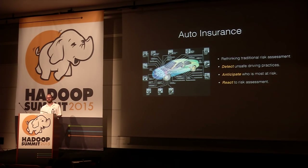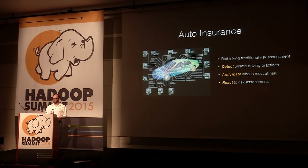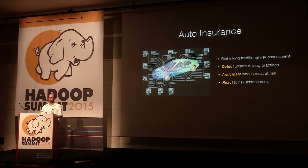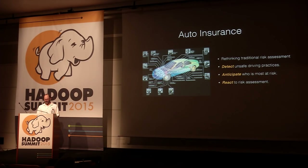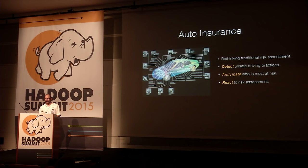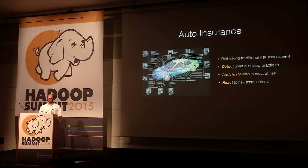In auto insurance, many companies are rethinking traditional risk assessment. Young male drivers are traditionally flagged as the highest risk, a model that punishes good young drivers by lumping them into one group. Insurance companies are putting sensors in cars that detect safe or unsafe driving practices, predict who is most at risk, and then react by pricing insurance policies accordingly — determining if you're a high-risk or low-risk driver based on actual sensor data.